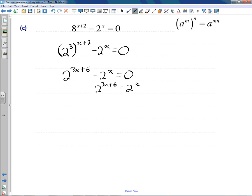Now we can just do our comparison. That must equal that. So therefore we've got 3x plus 6 equaling x. Take x off of both sides, and I suppose minus 6 from both sides, and divide both sides by 2.